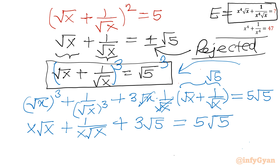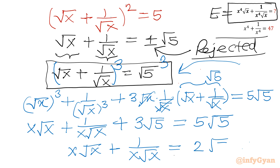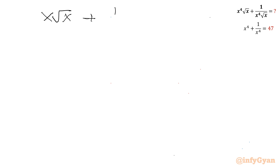Taking 3√5 from both sides: x√x + 1/(x√x) = 5√5 − 3√5 = 2√5. So we have x√x + 1/(x√x) = 2√5.